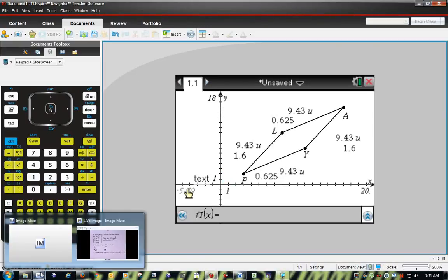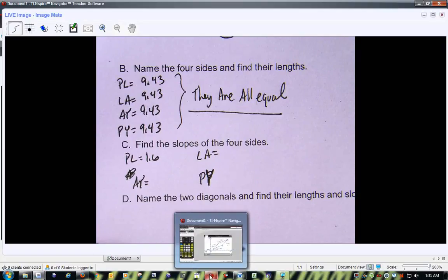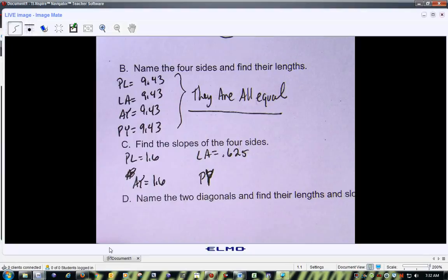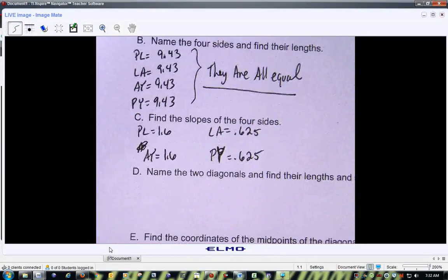So what's the slope of PL? 1.6. Now what was the slope of LA? 0.625. What about AY? 1.6. And PY? 0.625. All right, so we have our slopes.